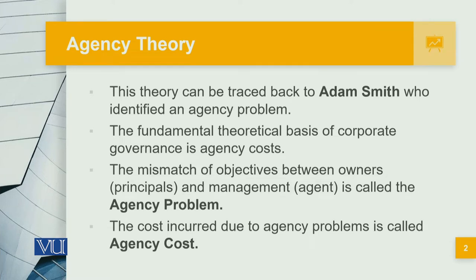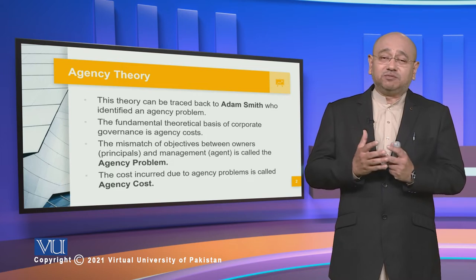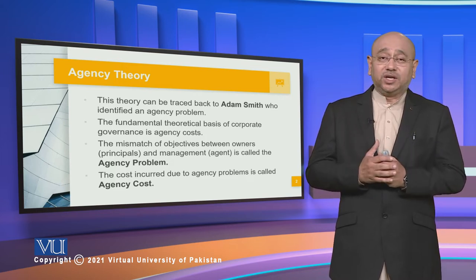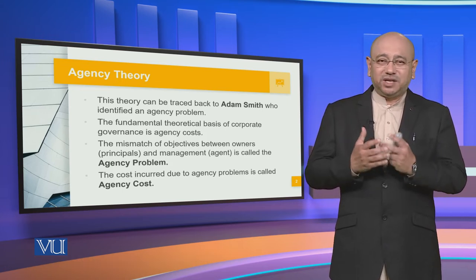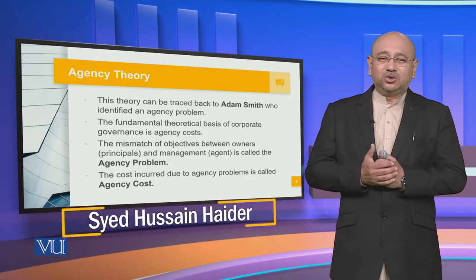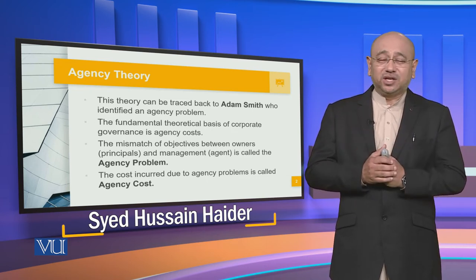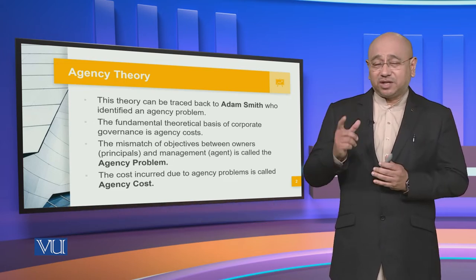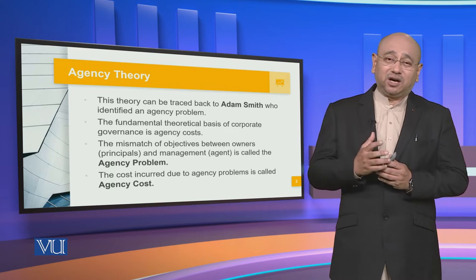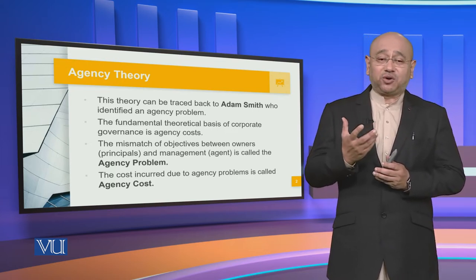This mismatch can many times lead to the bankruptcy of a particular organization. It can lead to its annihilation, its elimination, and it can lead to its scaling down below economies of scale. This mismatch is between the principals who are the shareholders and the management who is the agency working on behalf of the different shareholders, and that leads to the agency problem.